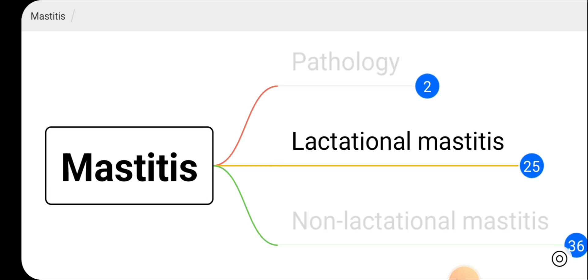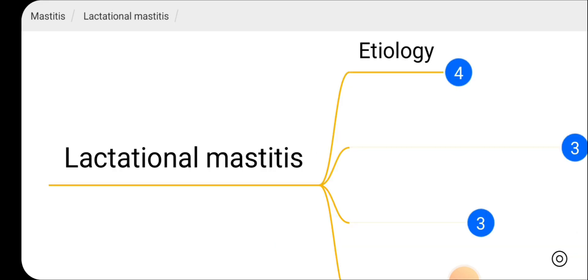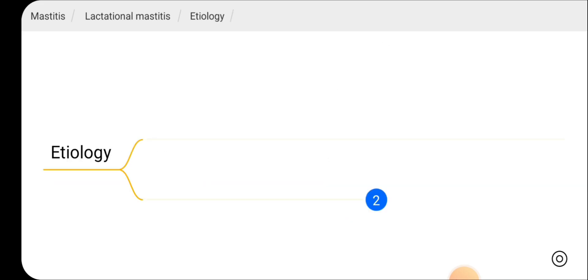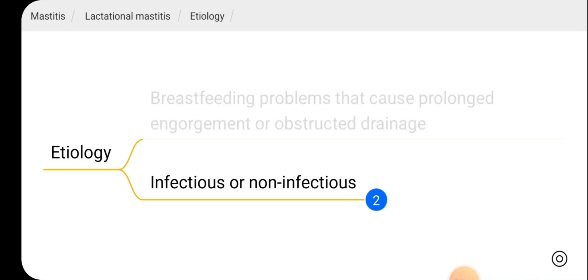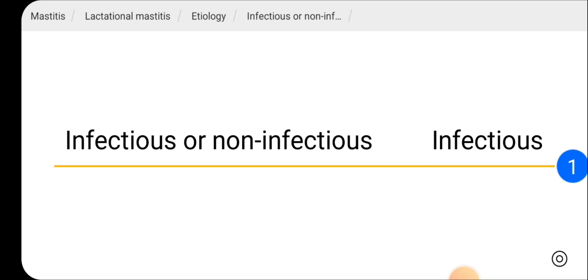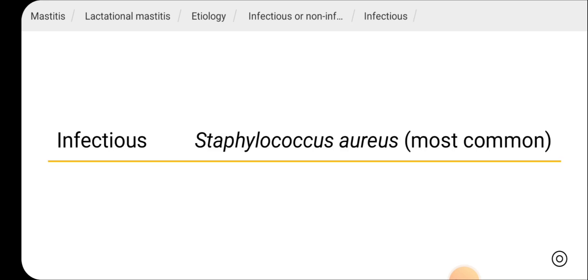Let's go through lactational mastitis. Regarding the etiology, by the name you know this clinical entity occurs in breastfeeding mothers. Breastfeeding problems that cause prolonged engorgement of the breast or obstructed drainage of breast milk may predispose to lactational mastitis, and that can be either infectious or non-infectious. The most common organism involved is Staphylococcus aureus.